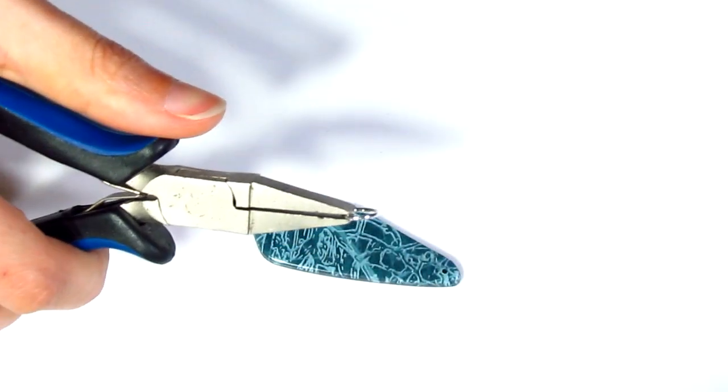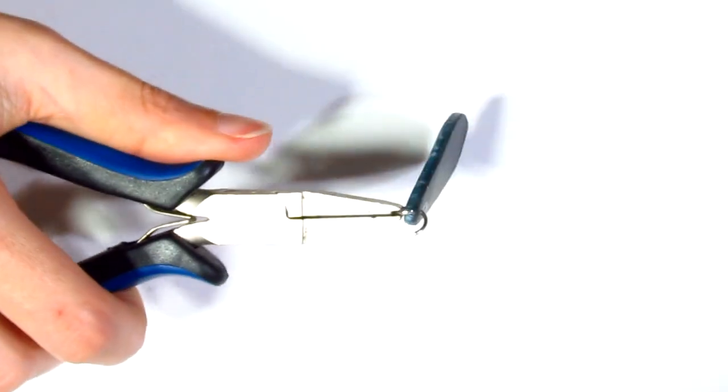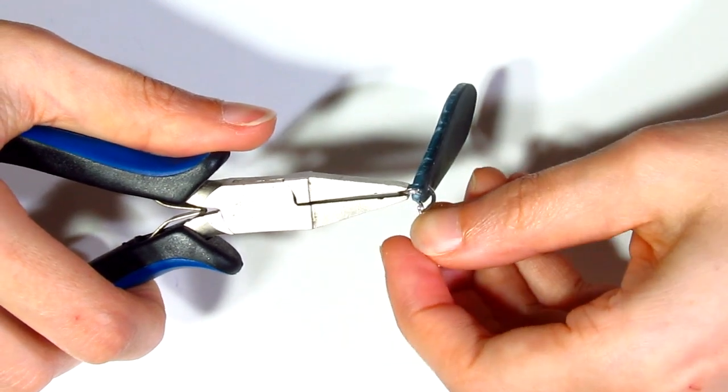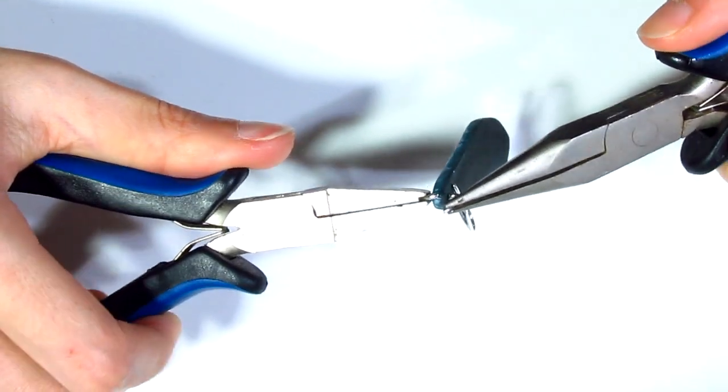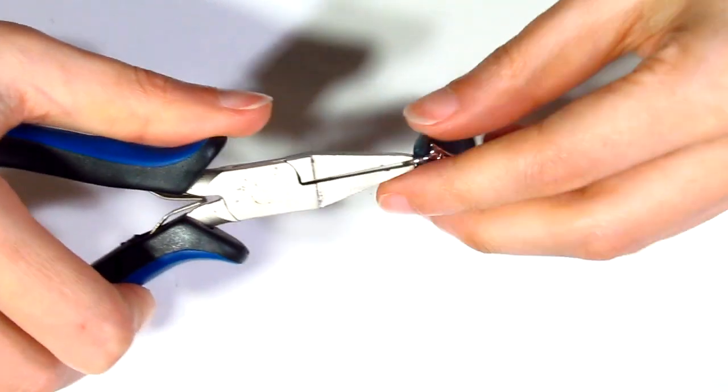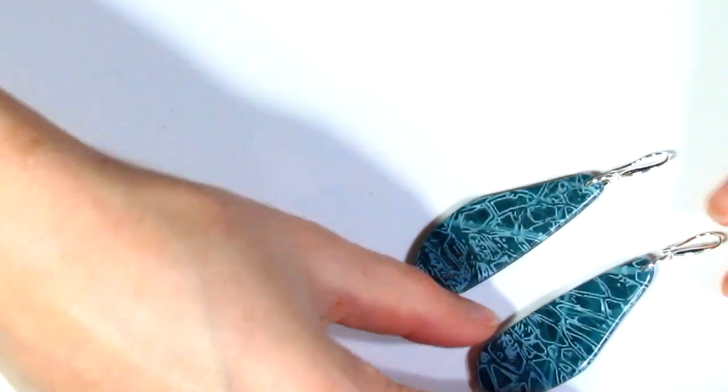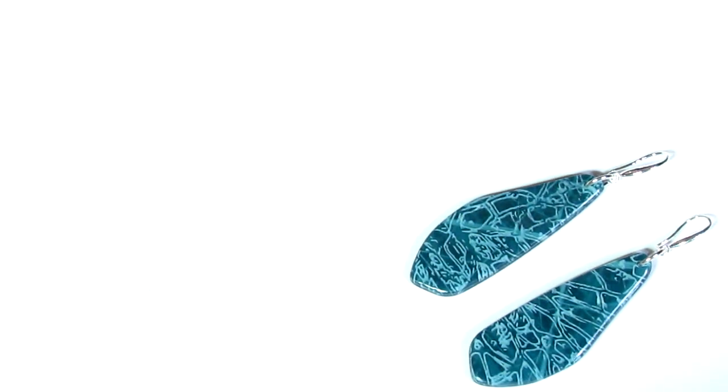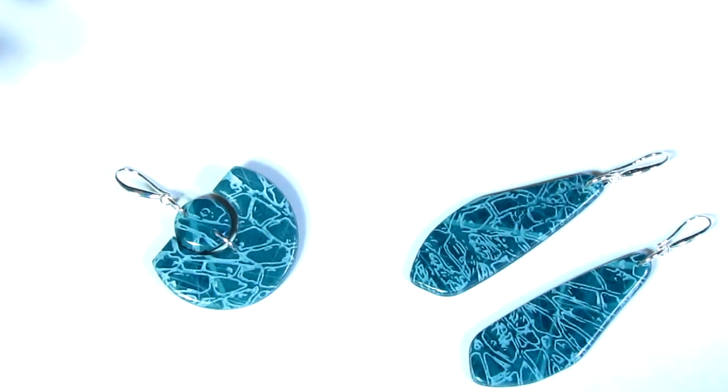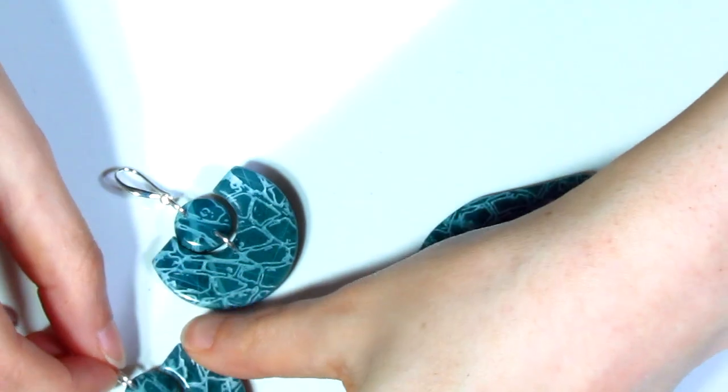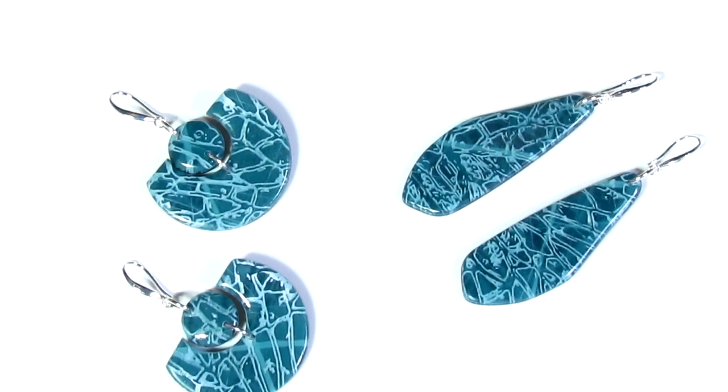Bring over a jump ring, pop that through, grab an ear wire and close it up. Super easy. So that's that one and here's the matching one. And then for the other two, I actually assembled them like this. And you can of course assemble them however you want. This is just the way that I chose to assemble them.